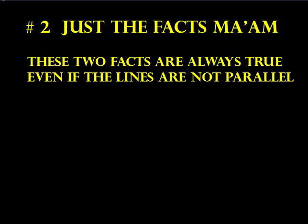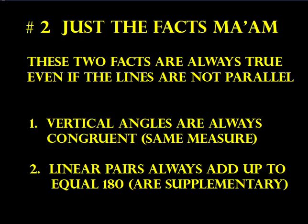Number 2: make sure you know those facts. These two facts are always true, even if the lines are not parallel. Those two facts are our friends again from Unit 1. Vertical angles are always congruent, meaning they have the same measurement. And linear pairs always add up to 180 degrees, meaning they are supplementary — even if the lines are not parallel.